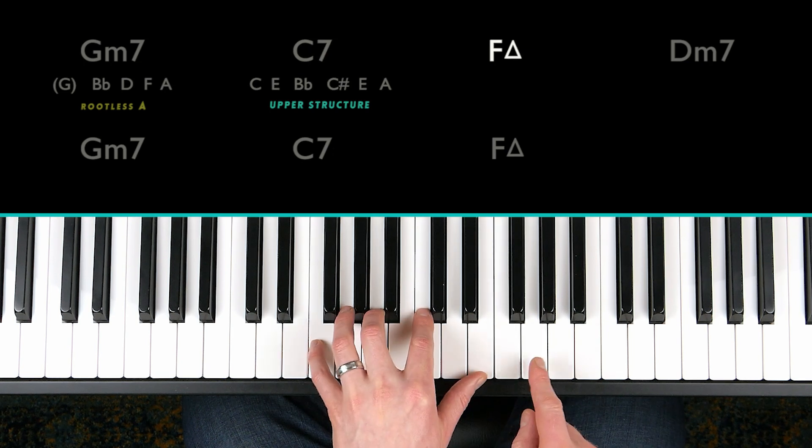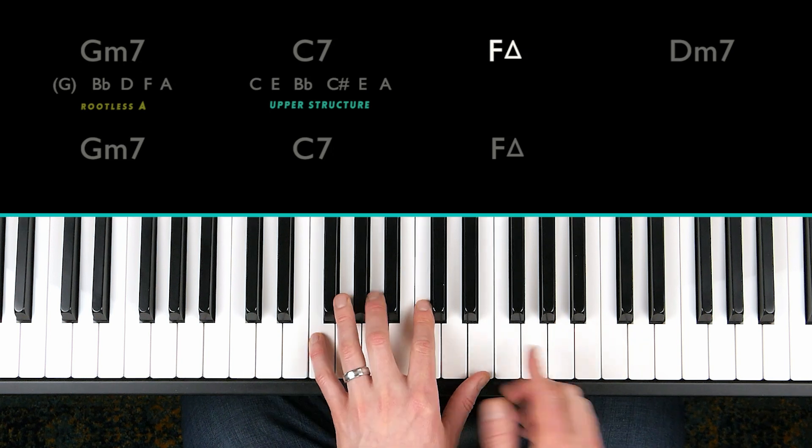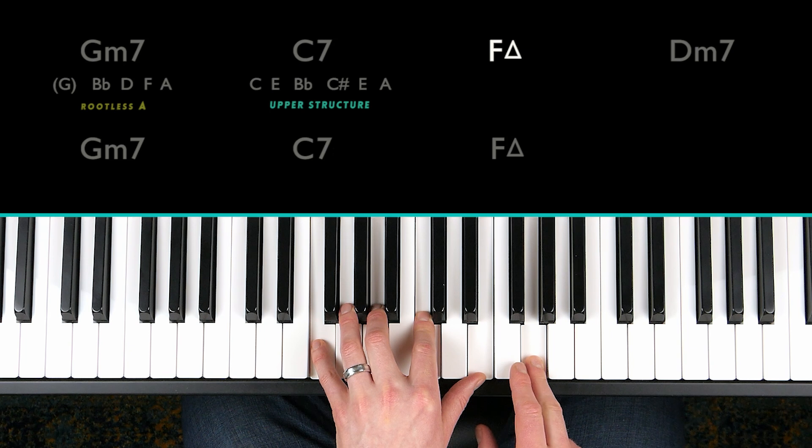Next, we have an F major seven chord. The melody note is G. Which scale degree is G over F? And it's the ninth, just a whole step up.